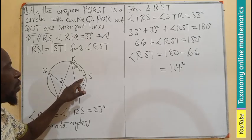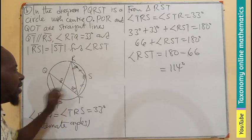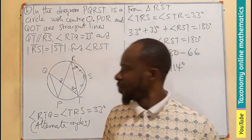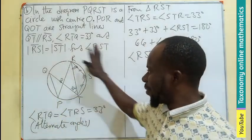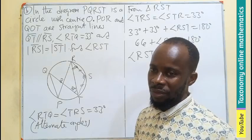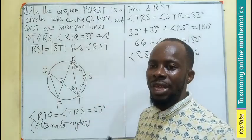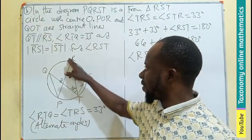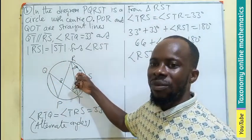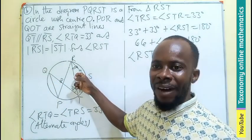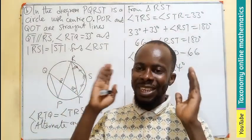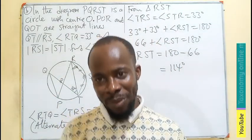So the value of angle RST is 114 degrees. Note that we did not use any circle theorem property here — only properties of parallel lines and properties of triangles from plane geometry. Thank you so much for watching. Like, share, comment, and subscribe. Bye!